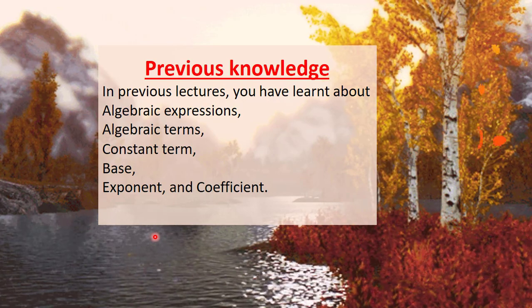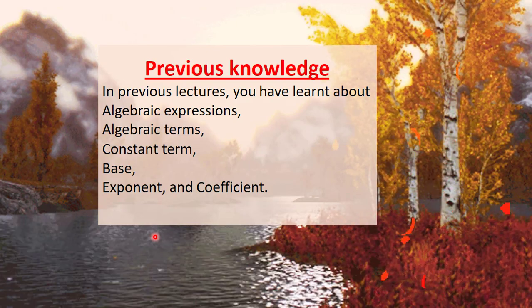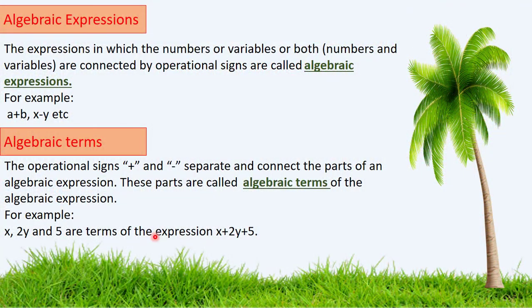In previous lectures, you have learned about algebraic expressions, algebraic terms, constant term, base, exponent, and coefficient. Algebraic expressions are expressions in which numbers or variables or both are connected by operational signs. For example, variables a and b are connected by the operational sign plus, and variables x and y are connected by the operational sign minus.